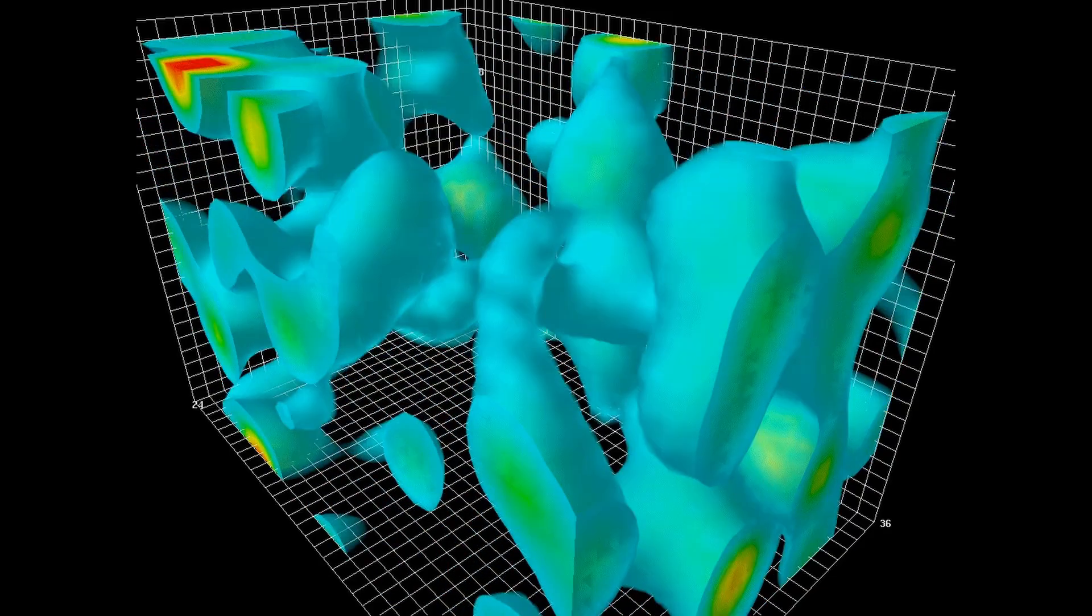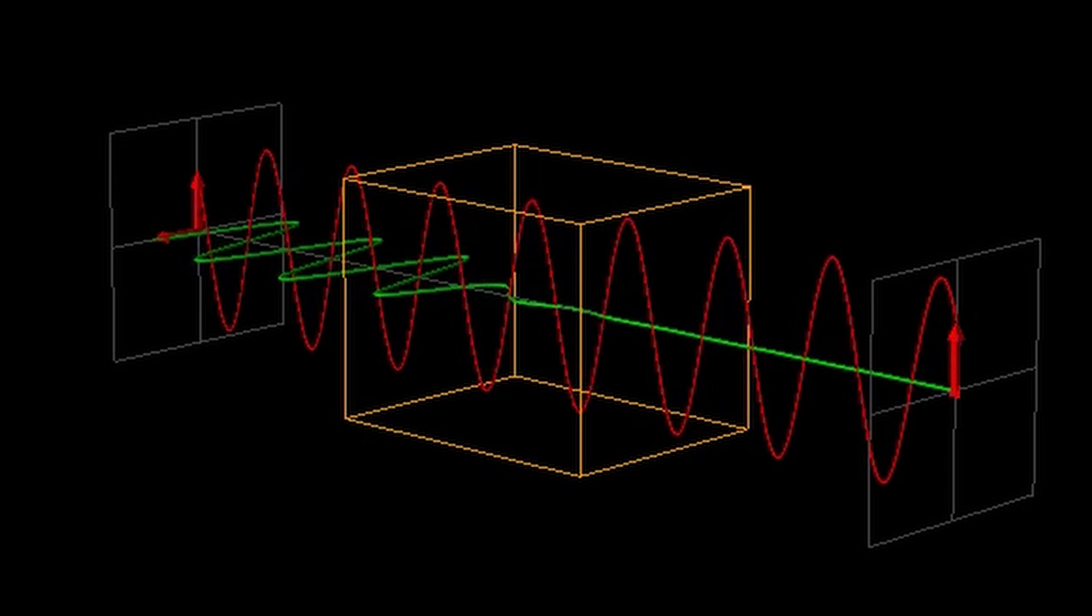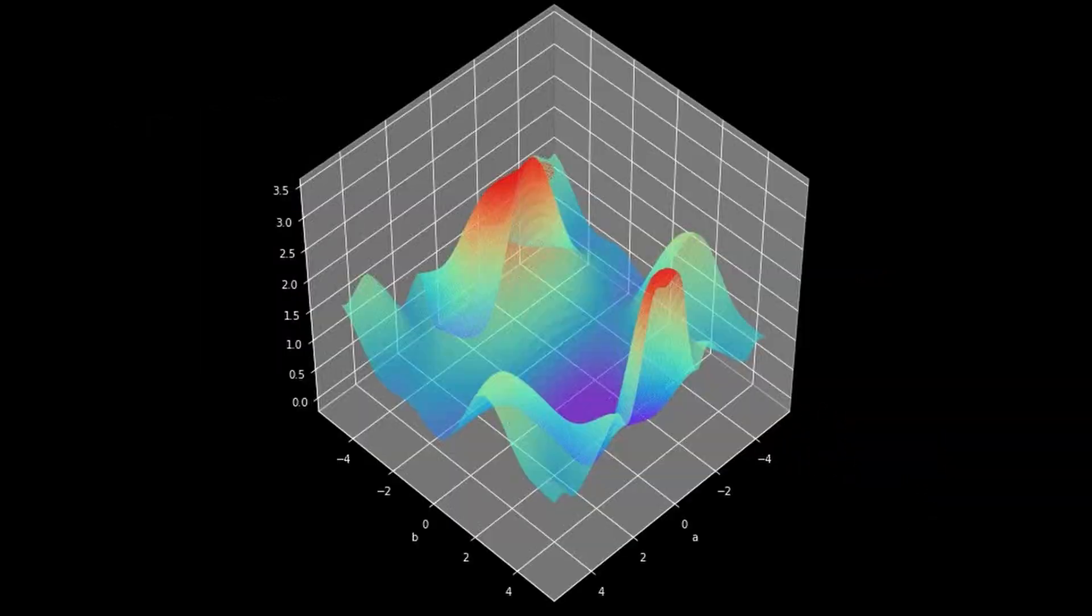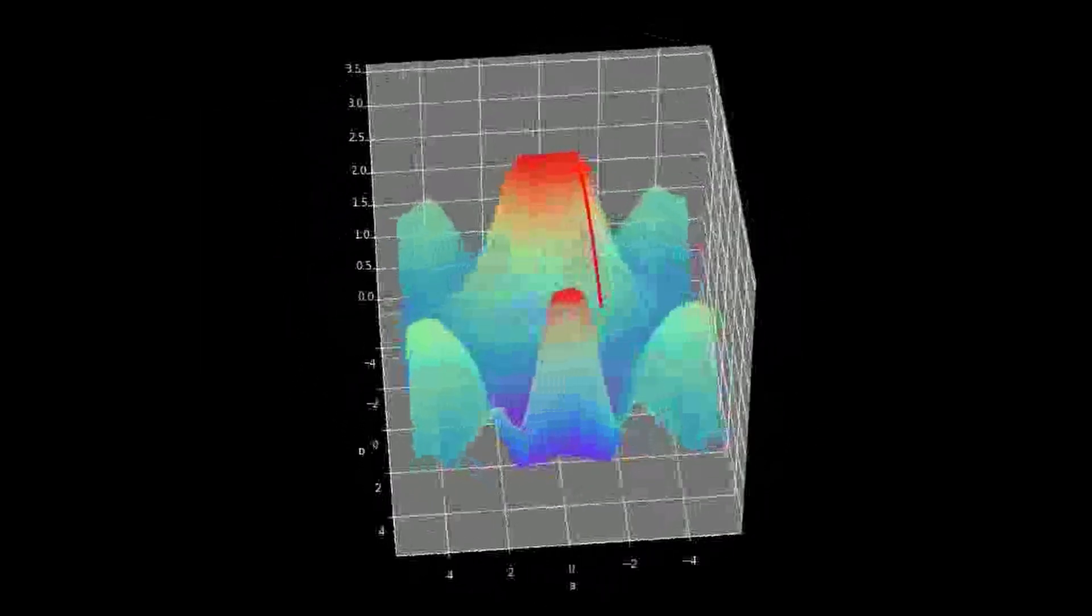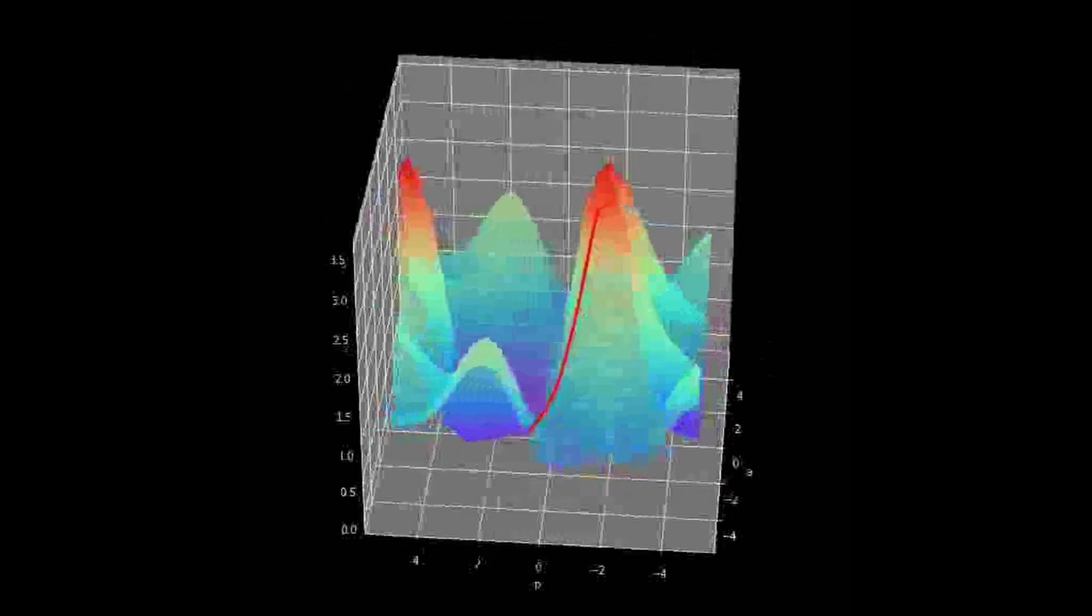The fractal uncertainty principle: Dyatlov and Zahl reduced the spectral gap question for convex compact hyperbolic manifolds to a fractal uncertainty principle. Understanding the precise relationship between spectral gaps and geometric properties continues to be an open problem.